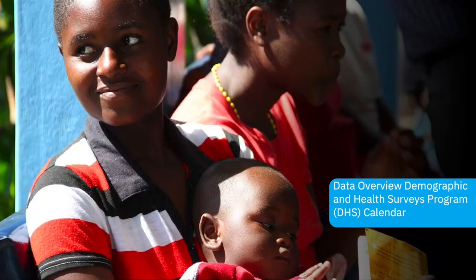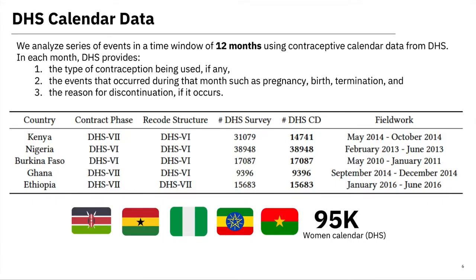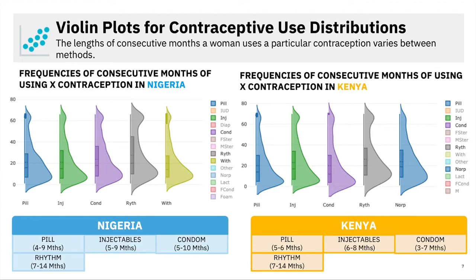First, a quick overview of the data. While the DHS data provides us with five years of calendar data for women's contraceptive use, we use the most recent 12 months to reduce recall bias. We examine a total of 95,000 records. We wanted to understand the typical length of time a woman uses a particular contraceptive method before switching or discontinuing. Depending on the method of contraception used, there is a probability distribution for how long a person will continue with the same method. This gives us information about the adherence to each contraceptive method, and they should not be treated with a unique time window.